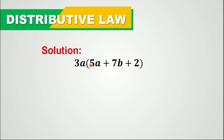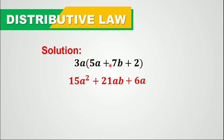You're going to multiply 3a by 5a, and then 3a by 7b, and then 3a by 2. So 3a times 5a is 15a squared. Then 3a times positive 7b is 21ab. And then 3a times 2 is 6a. So therefore, 3a times 5a plus 7b plus 2 is 15a squared plus 21ab plus 6a.